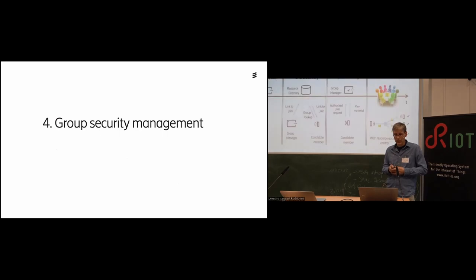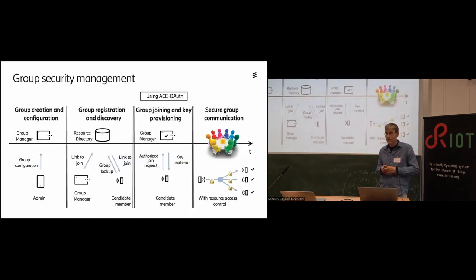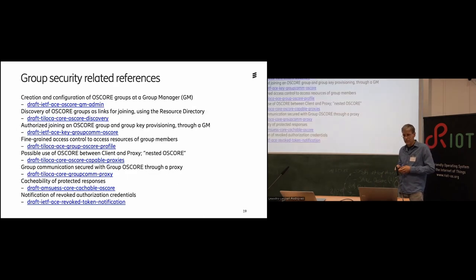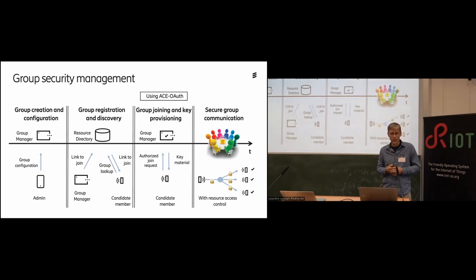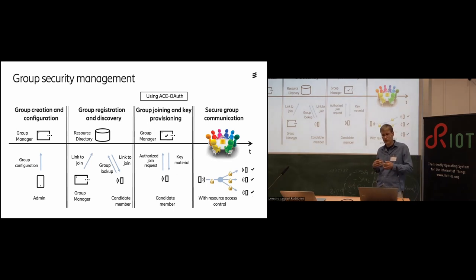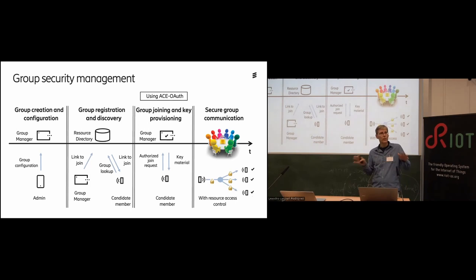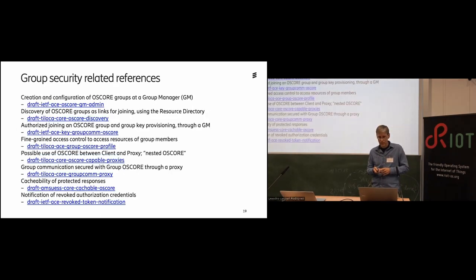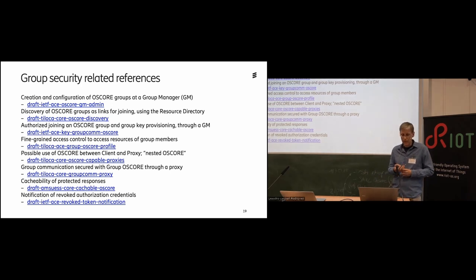How to get the group keys in place — both the shared secret and the public keys — is a mature area. The group security lifecycle starts with an admin configuring a node to be a group manager, that group manager being included in a resource directory, a candidate member finding the resource directory, getting the link to join, sending a join request using the ACE authorization scheme, and getting back the key material. With the key material in place, group communication can proceed.